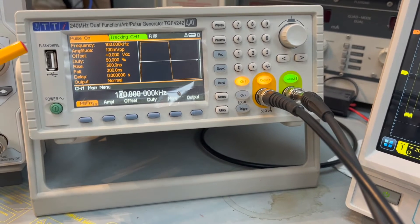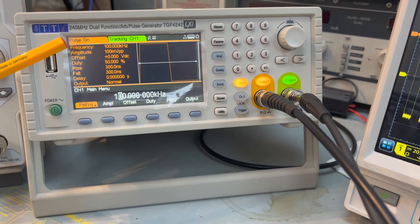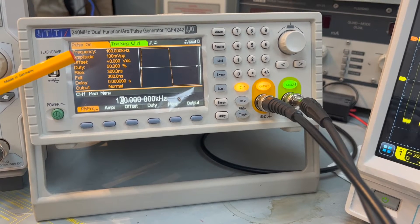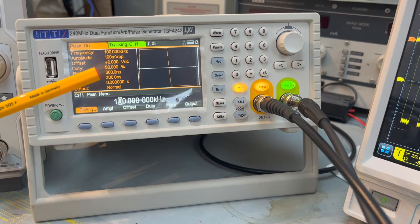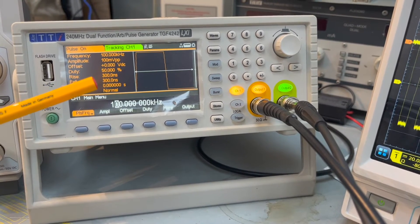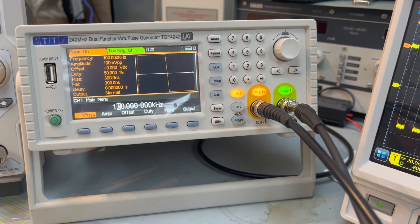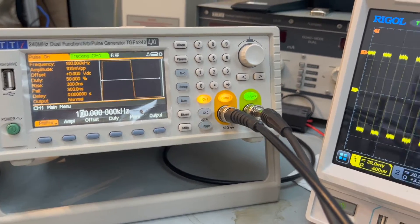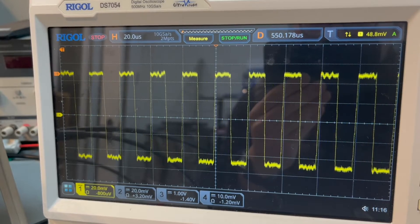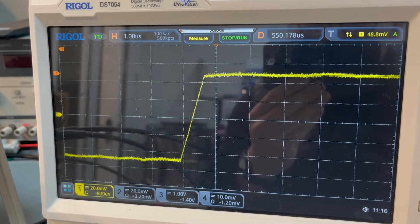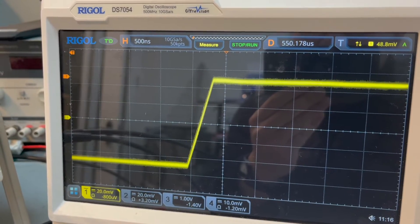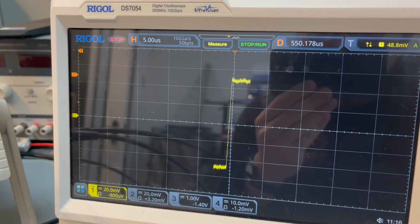We set a pulse signal to be switching at 100 kHz with 100 mV peak-to-peak voltage and a duty ratio of 50%. Notice that the rise and fall time is currently set at 300 ns, quite a large value. On the oscilloscope, that's the switching pattern, and if we zoom in, we can actually see the rise time is roughly 300 ns in this case.